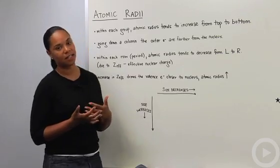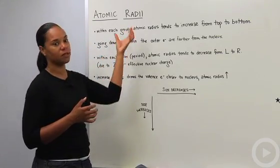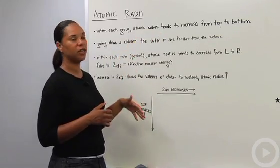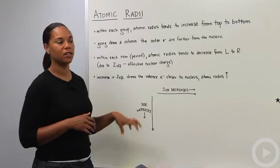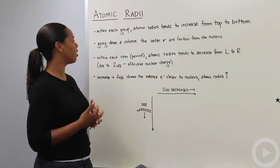So what do I mean when I say atomic radii? Basically within each group, remember groups or families are the columns on the periodic table, the atomic radius tends to increase from top to bottom. So at the top you have a smaller atomic radius. As you go down, the atomic radius gets larger.